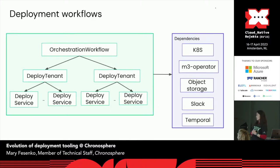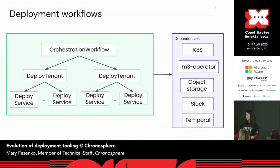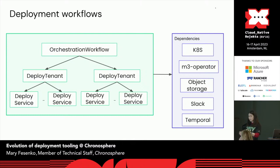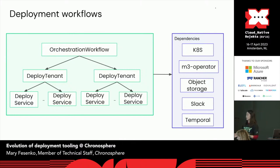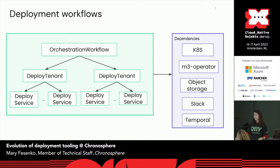Here's how we structured our deployment workflows at the high level. The first workflow, deploy service, does exactly what it says: deploys one service, applies changes, waits for them to complete, or fails otherwise. The next level, deploy tenant workflow, is responsible for deploying changes to one tenant — it initiates multiple deploy service workflows, figures out the order, and performs additional monitoring such as checking whether any critical alerts fired since deployment started. The high-level orchestration workflow handles deploying multiple tenants within a cluster, deciding how fast to go, how many tenants at a time, and how to handle failures and rollbacks.